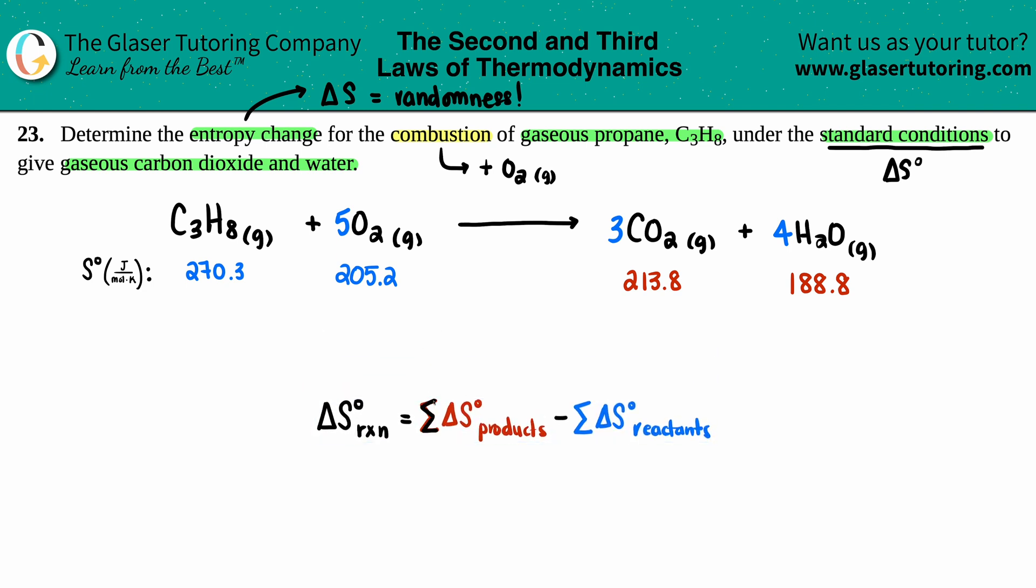This delta S just equals the sum, that's this little squiggly line here, the sum which means addition, right? So just put a plus sign here. The sum of all your products, so that's all on the right side, minus the sum of all your reactants, your delta S's. So I take my S values, I sum them all up on the right side, take my S values, I sum them all up on the left side, and then I just do a little subtraction.